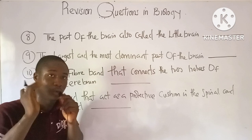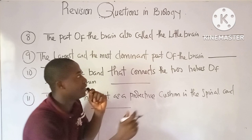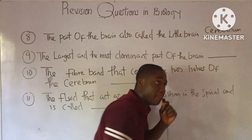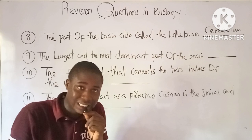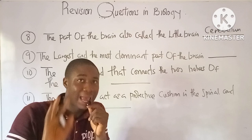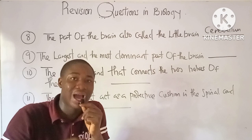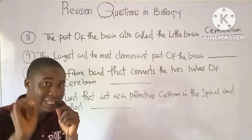Question 8: The part of the brain also called the little brain is the cerebellum, found in the hindbrain. The brain has three regions: the forebrain (cerebrum, thalamus, hypothalamus), the midbrain, and the hindbrain (cerebellum and medulla oblongata). The cerebellum is also called the little brain.